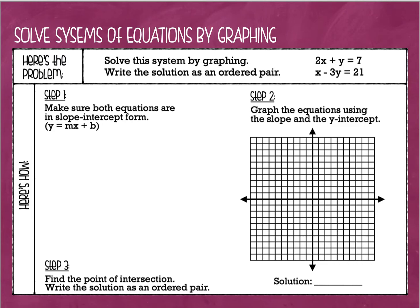The first problem is: solve the system by graphing and write the solution as an ordered pair. We have two equations: 2x plus y equals 7, and x minus 3y equals 21. The first thing we need to do is make sure that both equations are in slope-intercept form.